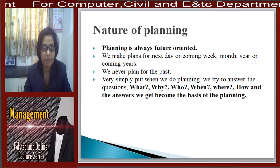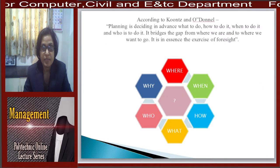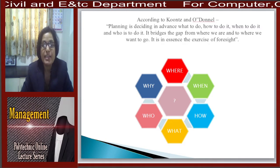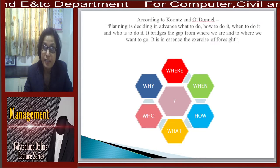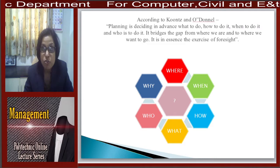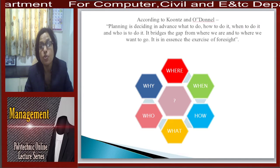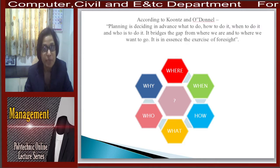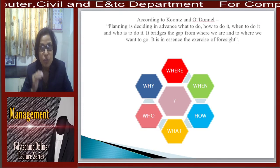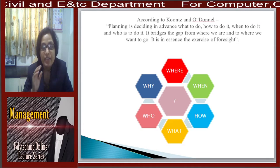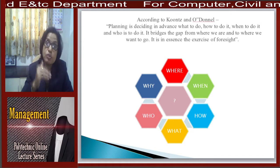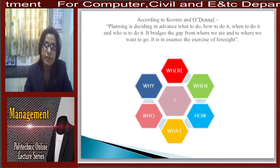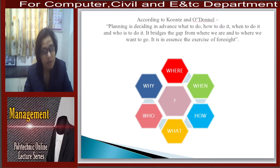According to Koontz and O'Donnell, planning is deciding in advance: what to do, how to do it, when to do it, and who is to do it. It bridges the gap from where we are to where we want to go. It is in essence the exercise of foresight. So these questions — where, when, how, what, who, why — should be asked before making any plan.